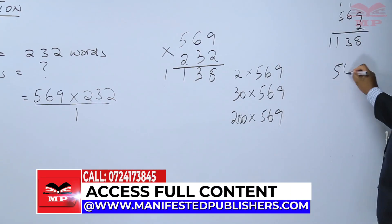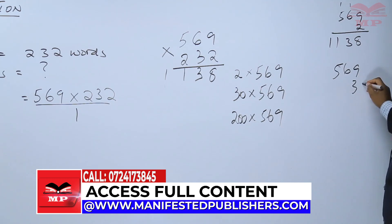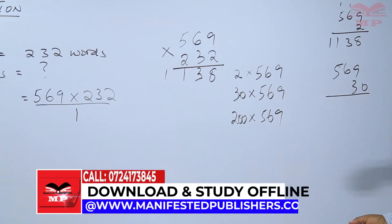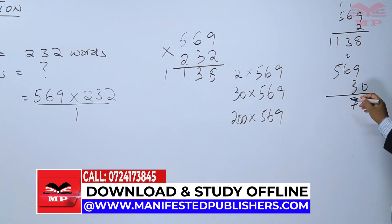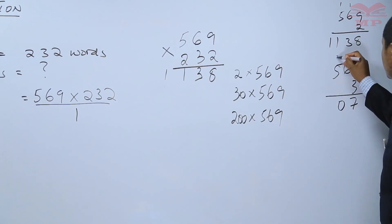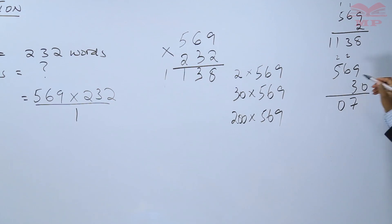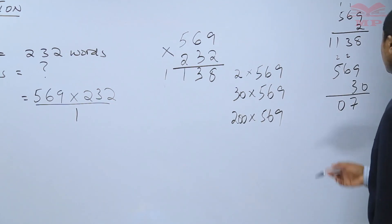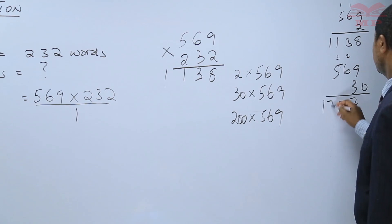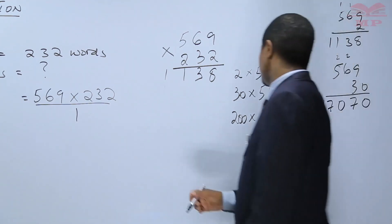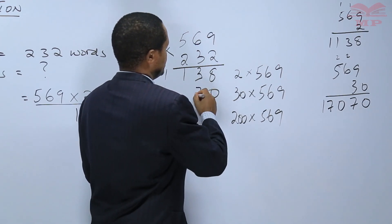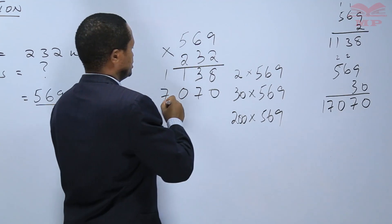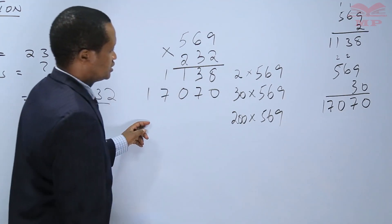Then 569 times 30: 9 times 3 is 27, write 7, carry 2. 6 times 3 is 18, plus 2 is 20, write 0, carry 2. 5 times 3 is 15, plus 2 is 17. There is a 0 here for the tens place, so we write 0, 7, 0, 7, 1, 7, 1.